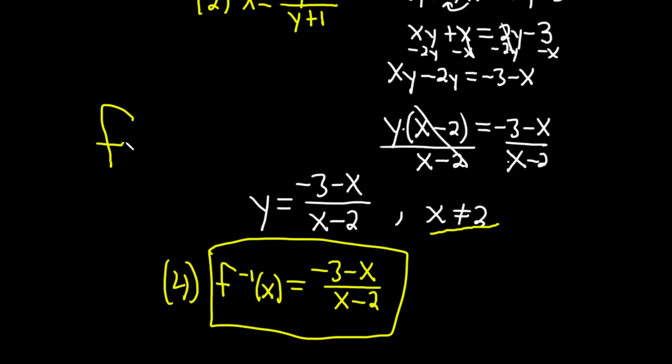So let me just write it again so you see how to read it. It's f inverse of x. So f, you read f. The little negative 1, you say inverse. When you see the parentheses, you say of. So it's f inverse of x is equal to, and it's going to be minus 3 minus x all over x minus 1. So it's also a rational function.